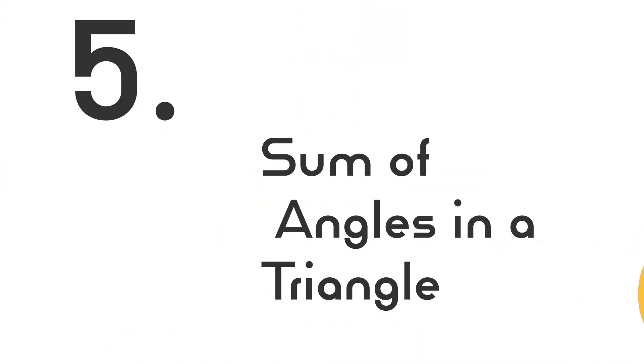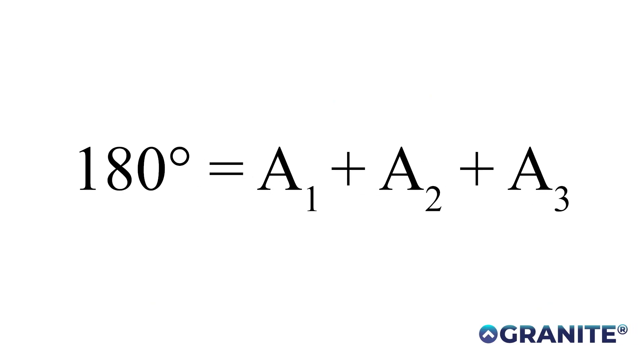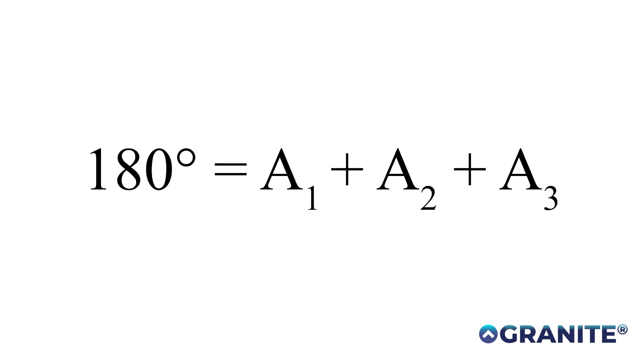Number five is another critical formula: the sum of all angles in a triangle equals 180 degrees. The ACT puts this on just about every test reliably. They'll give you a triangle with two angles and ask for the third, or give you a right triangle with one non-right angle and ask for the missing angle. Many students mistakenly think it's 360 or simply forget it's 180. If you know this, you'll get a lot more questions right.